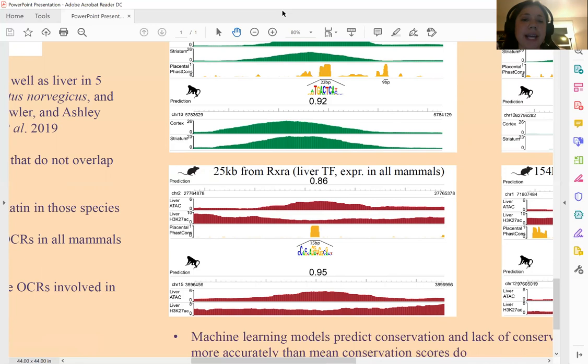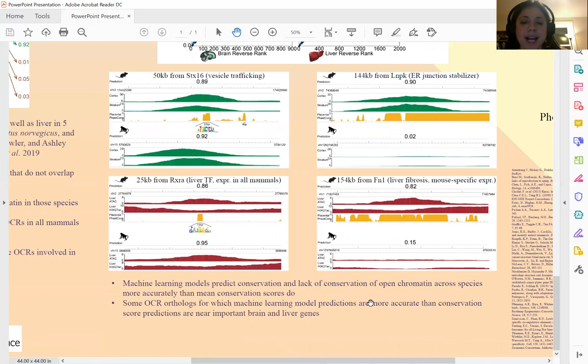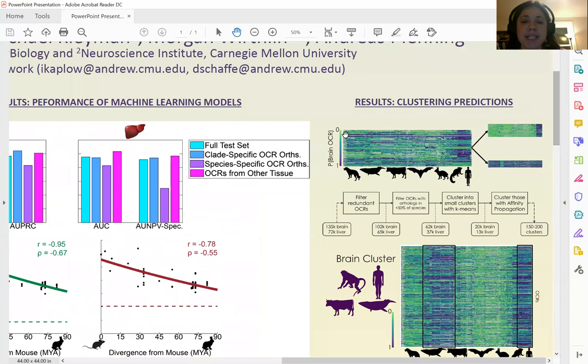Now that we have our open chromatin predictions, we wanted to try to study them in a systematic way. So what we did is we created a matrix where in each row we have an open chromatin region and each column we have its ortholog in a different species and our values are our predictions. In green we have predictions of closed chromatin, in blue we have predictions of open chromatin, and if we see gray that means that we were not able to find a usable ortholog. We then took this matrix and used this to create clusters of open chromatin regions based on the predictions of their orthologs' open chromatin status.